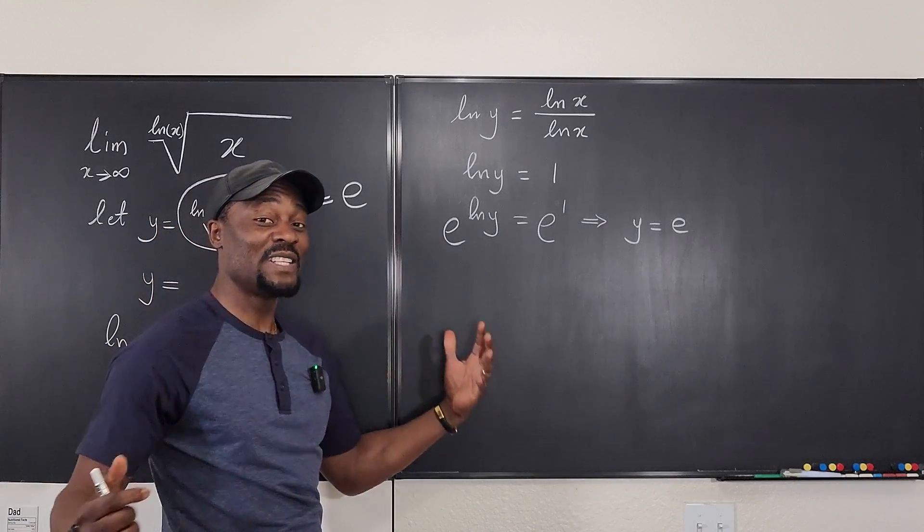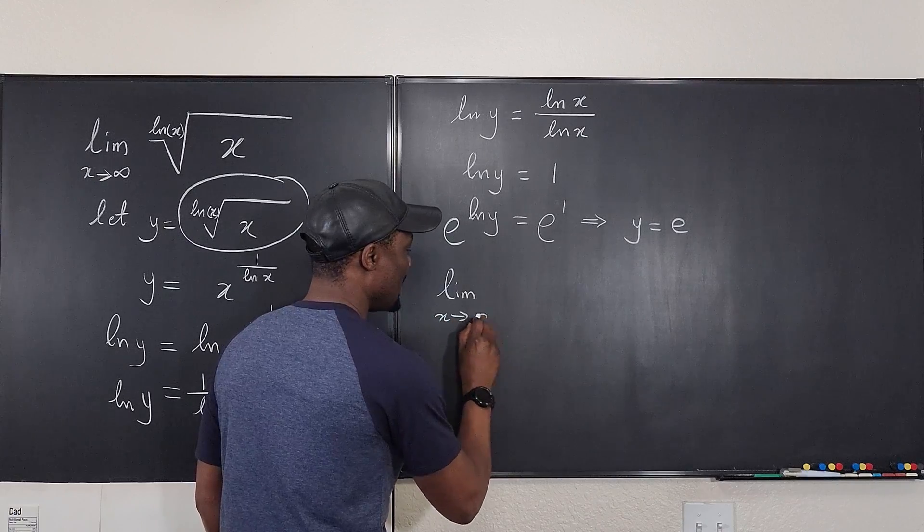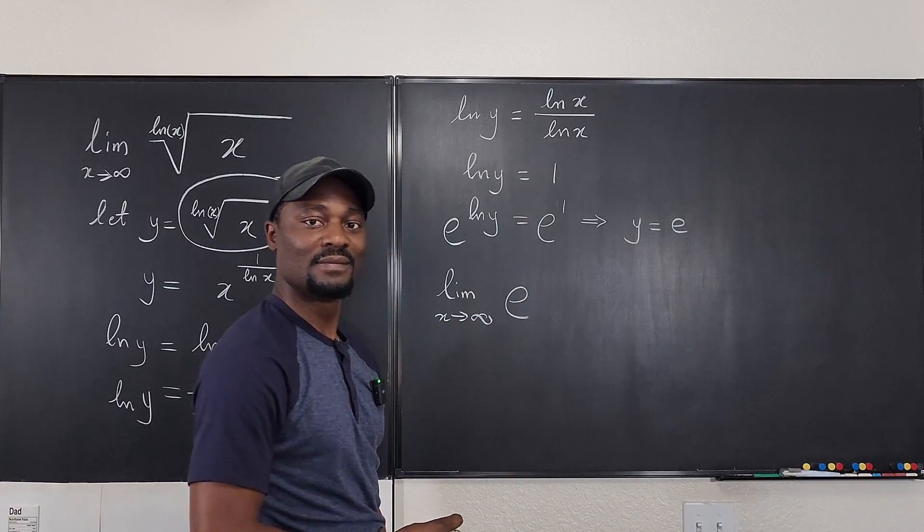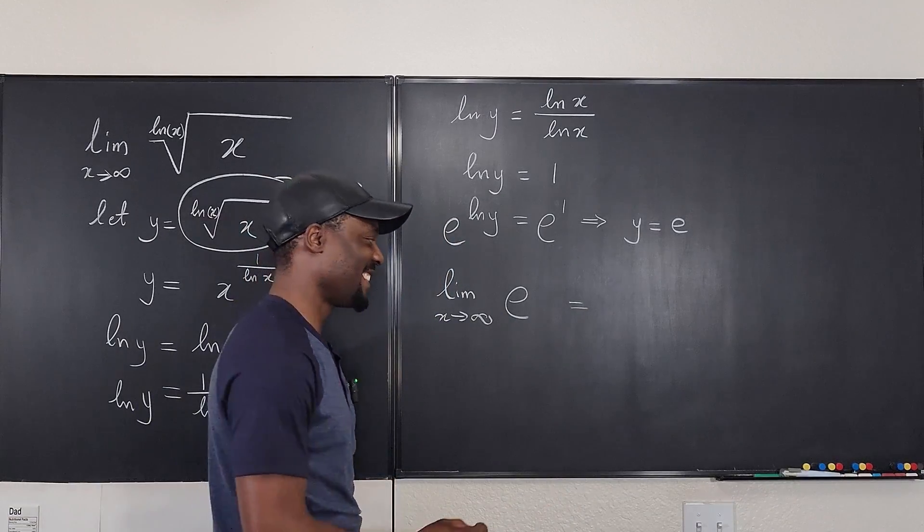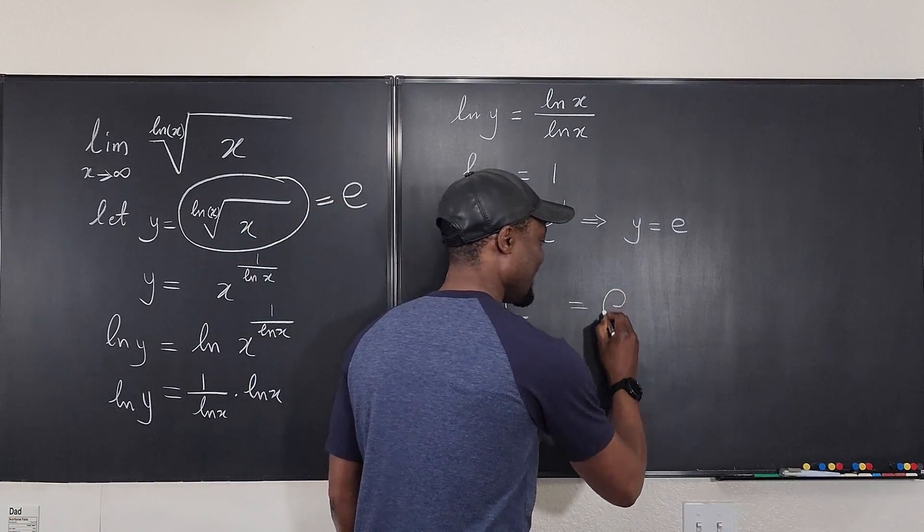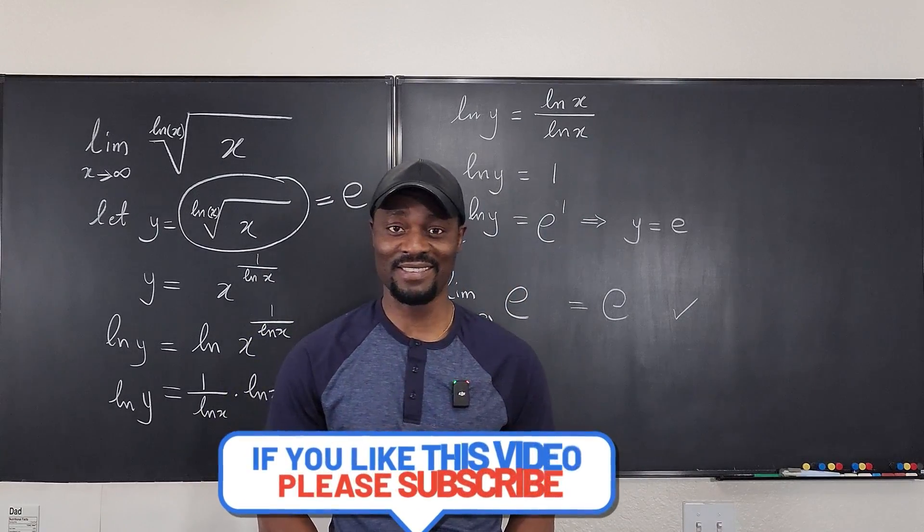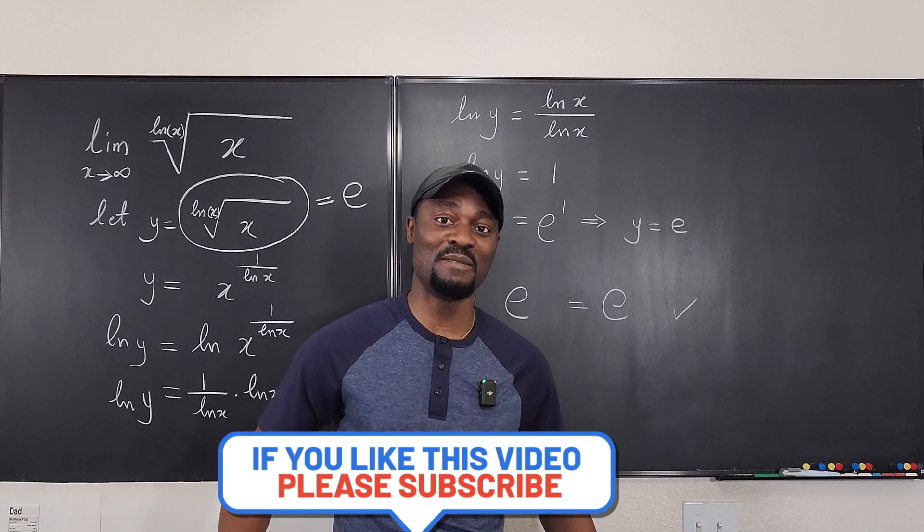So what is the question asking? What is the limit as x goes to infinity of e? Well, e has nothing to do with x, so it's e, and that's the answer. I'll see you in the next video. Never stop learning, because those who stop learning have stopped living. Bye-bye.